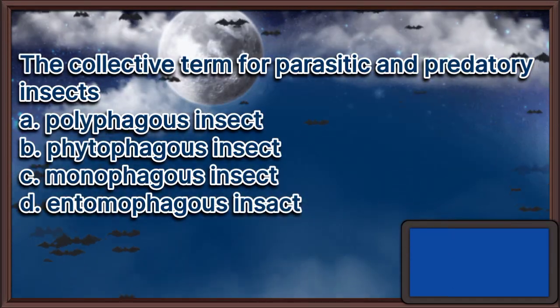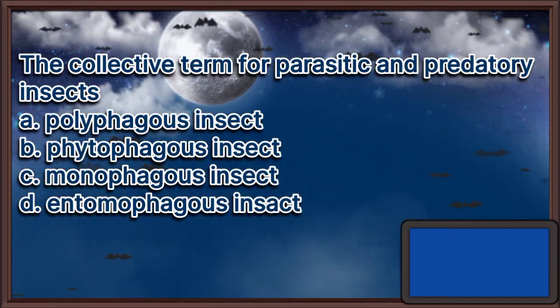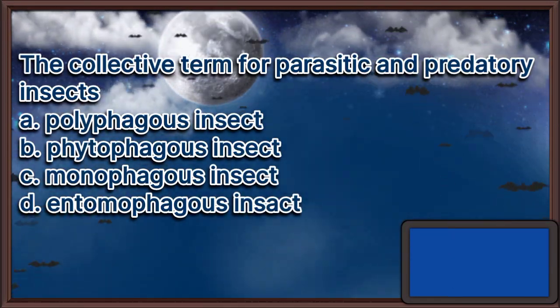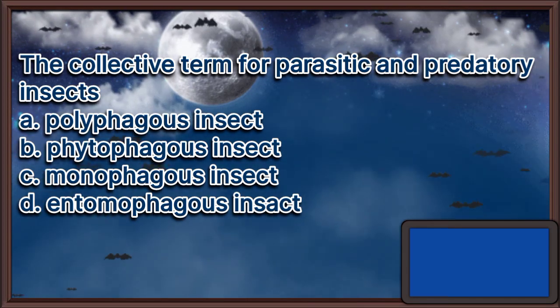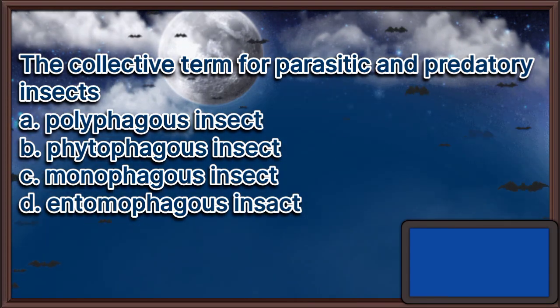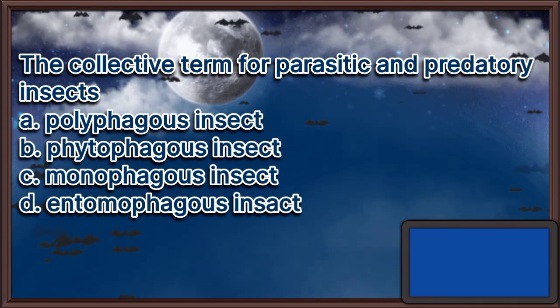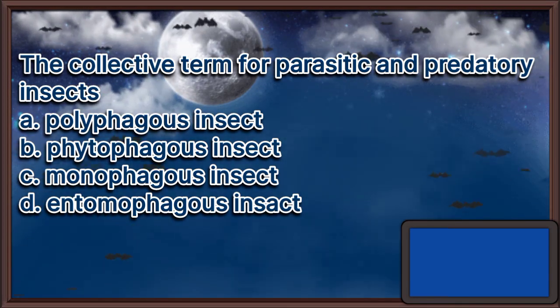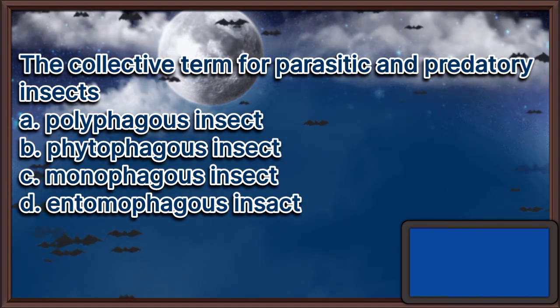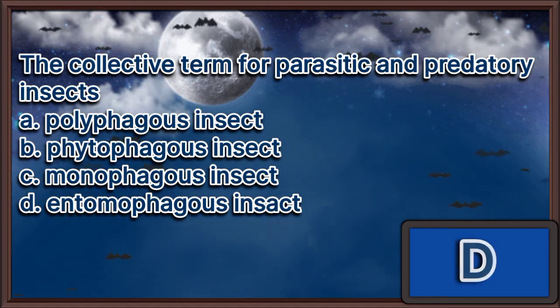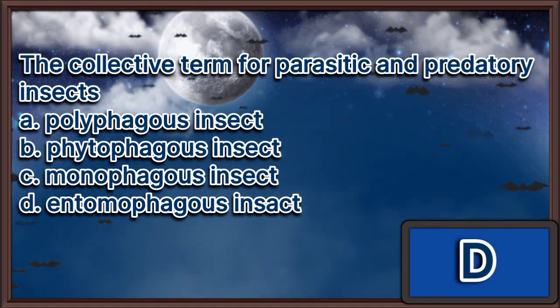The collective term for parasitic and predatory insects. A. Polyphagous insect. B. Phytophagous insect. C. Monophagous insect. D. Entomophagous insect. The answer is letter D.